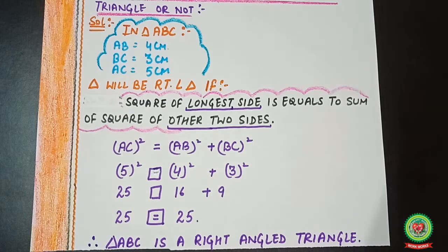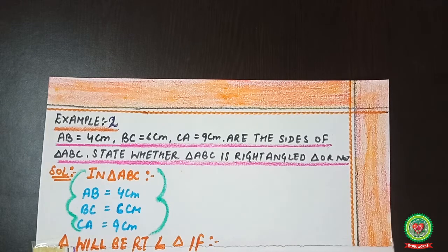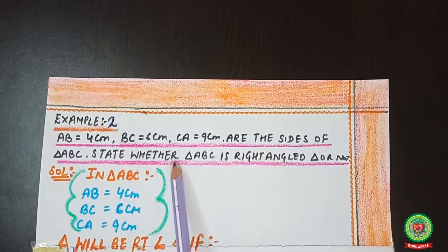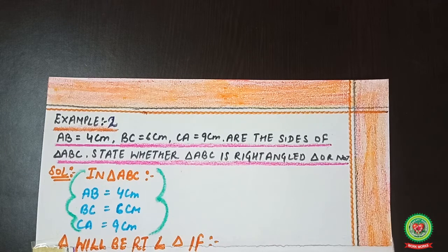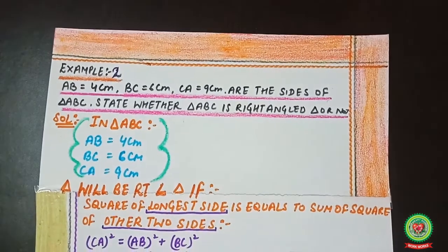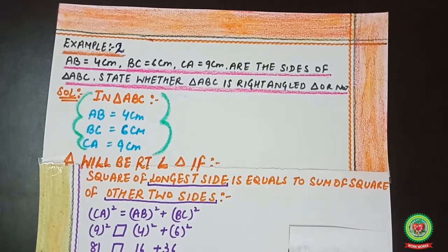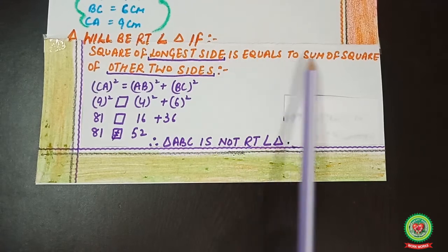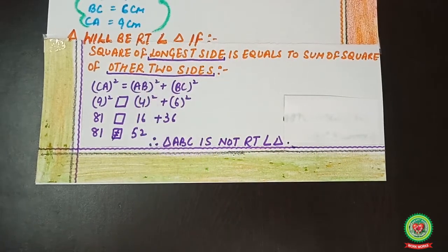Now move to Example 2. Read the statement: AB = 4 cm, BC = 6 cm, and CA = 9 cm are the sides of triangle ABC. State whether triangle ABC is a right angle triangle or not. Again, we need to prove whether the given sides form a right angle triangle. The triangle will be a right angle triangle if the square of the longest side equals the sum of the squares of the other two sides.